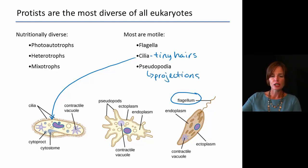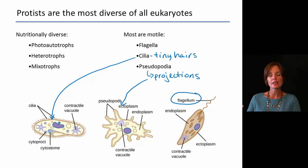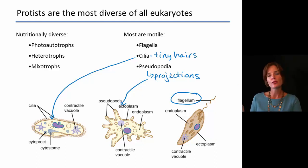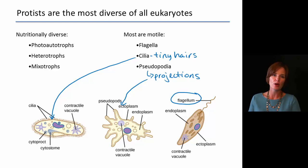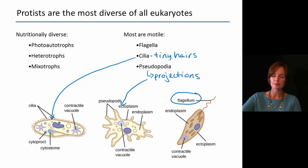We can also have pseudopods, which are projections — kind of like feet. The name 'pseudopodia' means false feet. These are projections that are constantly changing shape, and they allow the cell to actually move by continuously changing its shape. That's how these protists actually move around.